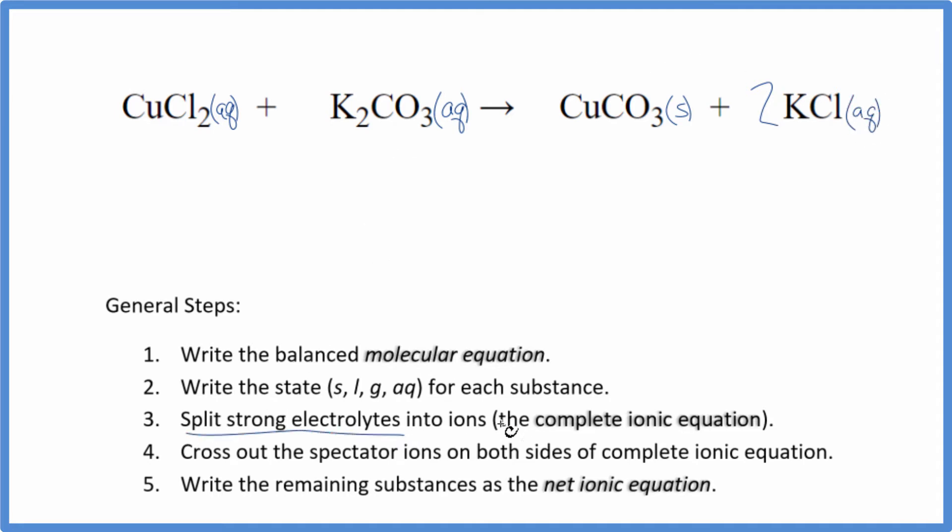Now we can split the strong electrolytes into their ions for the complete ionic equation. So copper, we don't know the charge on copper just looking at it, but we do note that the chloride ion, that's always 1 minus. And we have two of them, so 2 minus, this has to be 2 plus. So we have the copper 2 ion. I won't write this state, let's do that later. And then 2 chloride ions.